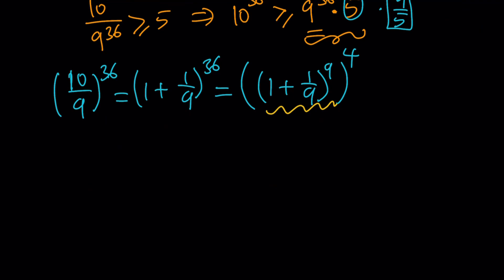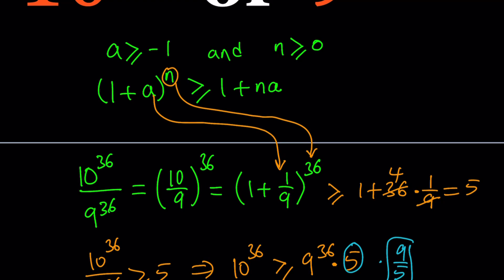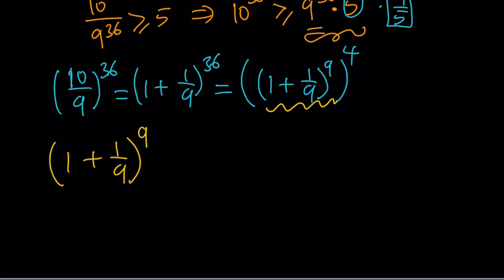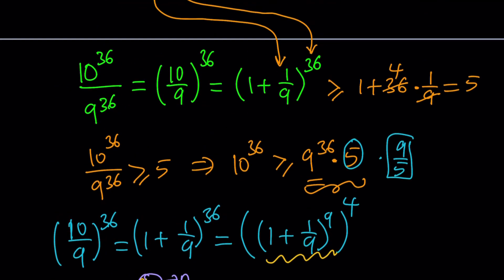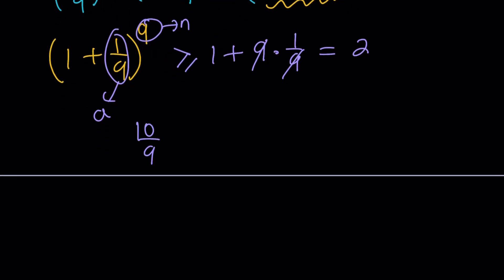We look at the inner expression (1 + 1/9)^9 first and apply Bernoulli's inequality: (1 + a)^n ≥ 1 + n·a, where a = 1/9 and n = 9. So 1 plus 9 times 1/9 — the 9s cancel — gives us 2. Therefore (1 + 1/9)^9 is greater than or equal to 2, and so (10/9)^36 is greater than or equal to 2.